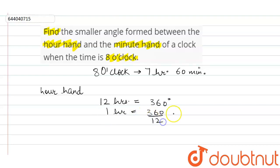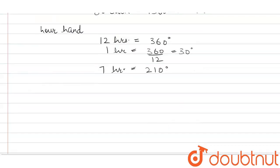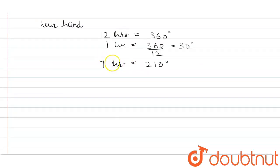In 1 hour it will make an angle of 30 degrees. So in 7 hours it will make an angle of 210 degrees. So we have found the angle for the hour hand which the hour hand will make.